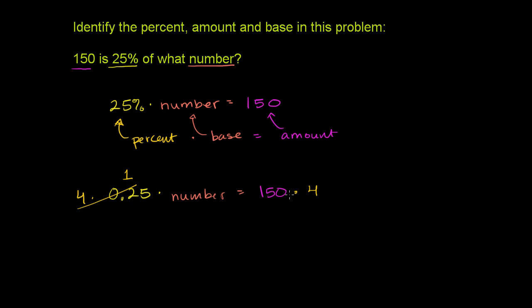And we're going to get our number is equal to 150 times 4, or it is equal to 600. And that makes sense. 25% of 600 is 150. 1 fourth of 600 is 150.